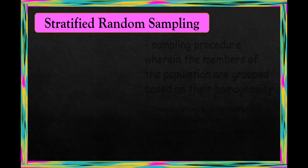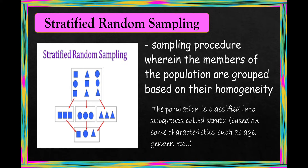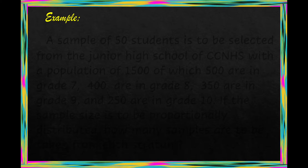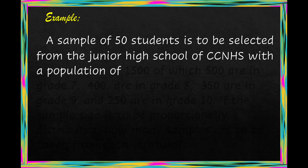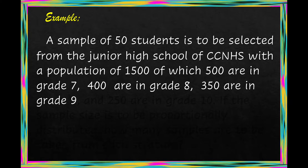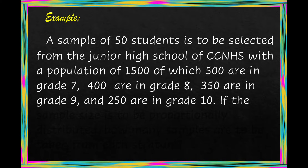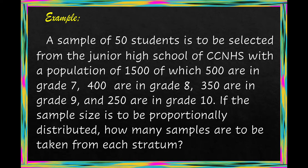Next, we have stratified random sampling. It is a sampling procedure wherein members of the population are grouped based on their homogeneity. The population is classified into subgroups called strata based on characteristics such as age, gender, and others. For example, a sample of 50 students is to be selected from the junior high school of CCNHS with a population of 1,500, of which 500 are in grade 7, 400 are in grade 8, 350 are in grade 9, and 250 are in grade 10. If the sample size is to be proportionally distributed, how many samples are to be taken from each stratum?